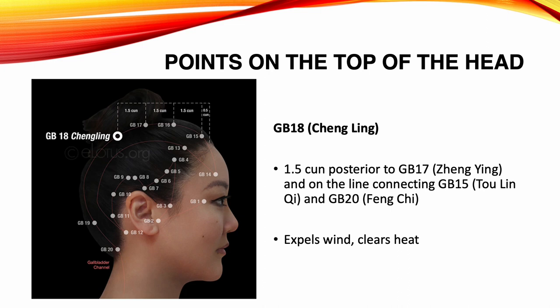Gallbladder 18, Chung Ying. Location: 1.5 Sun posterior to Gallbladder 17, on the line connecting Gallbladder 15 and Gallbladder 20. Functions: expels wind, clears heat. Indications: headache, dizziness, nasal congestion, nose bleeds, common cold, blurred vision.